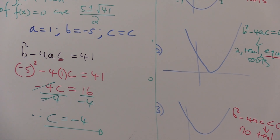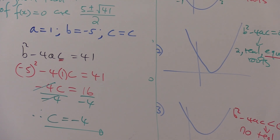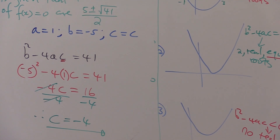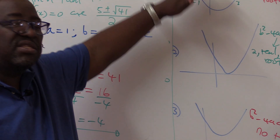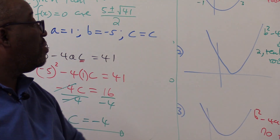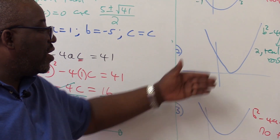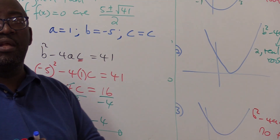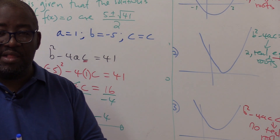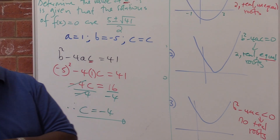This is how you go about solving this problem. No matter how they twist these questions, they're just asking about the discriminant, and the roots can only behave in these three different ways. Thank you so much.